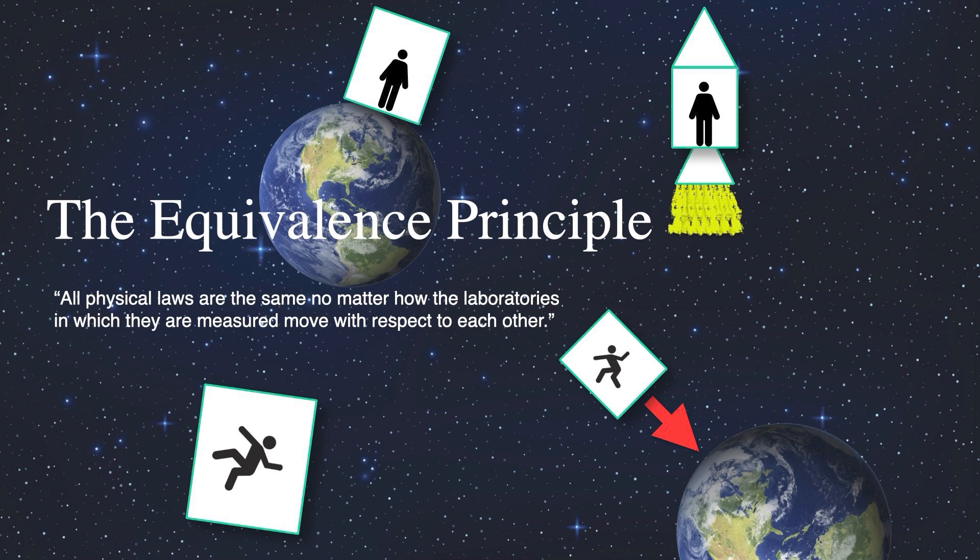For example, suppose you are standing in a windowless room on the surface of the Earth. Here, you will experience the same physical laws as someone in a windowless rocket that is accelerating upwards with the same rate as the gravitational pull on the Earth. In other words, there is no way to distinguish between being in a room on the Earth's surface and being in a rocket accelerating upwards at 1g.